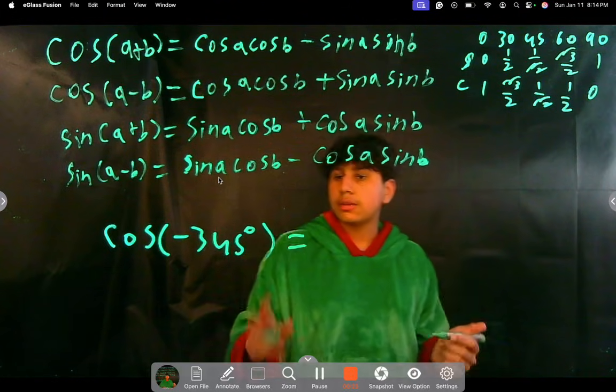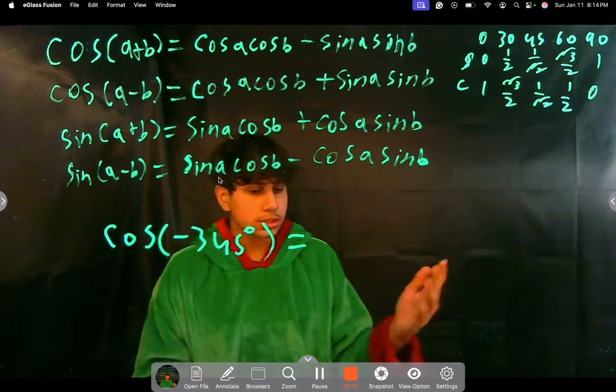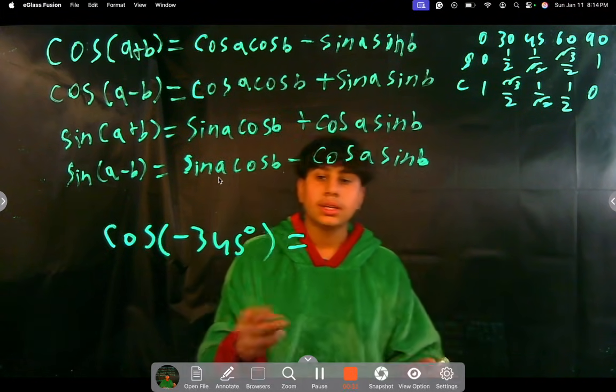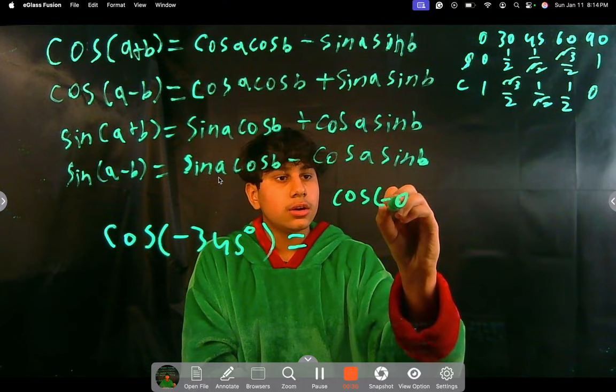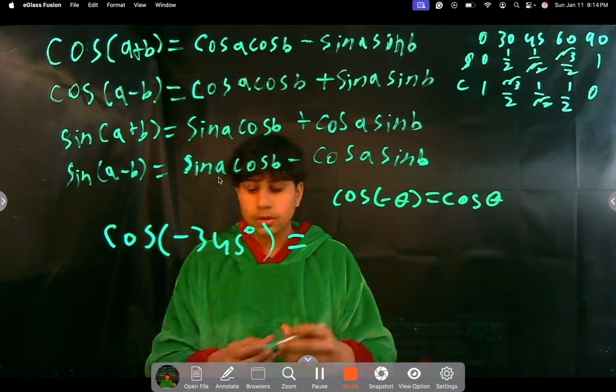So we have cosine of negative 345, and while this might look daunting, it's just a step-by-step process. First, we get rid of the negative, because cosine being an even function, cosine of negative theta just equals cosine theta.